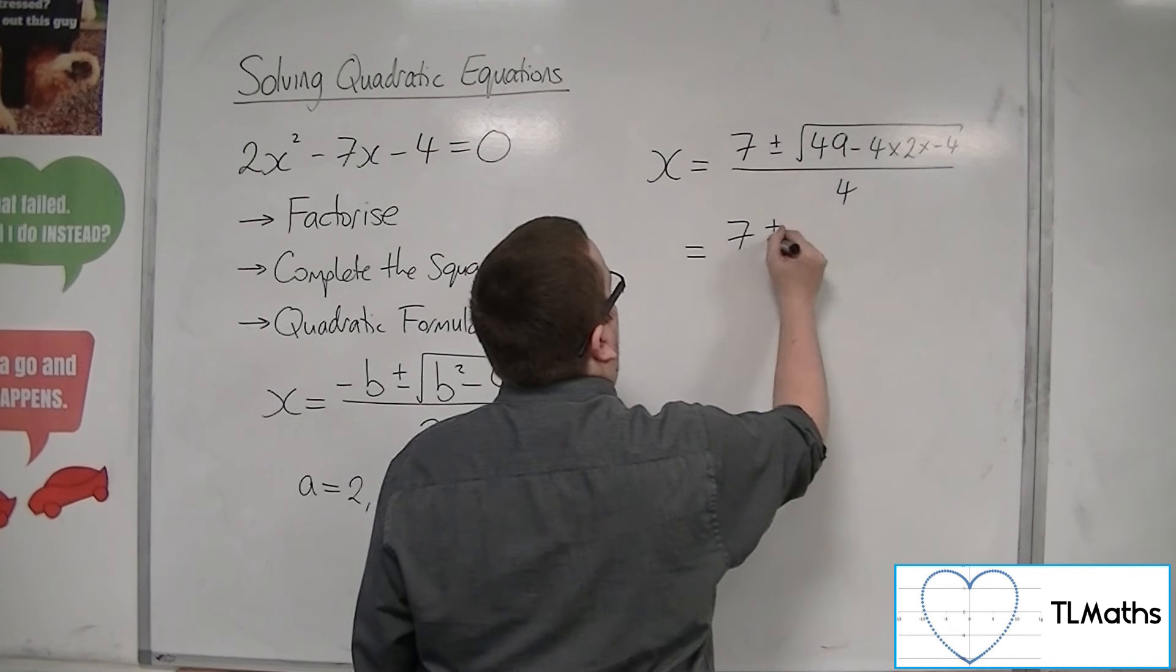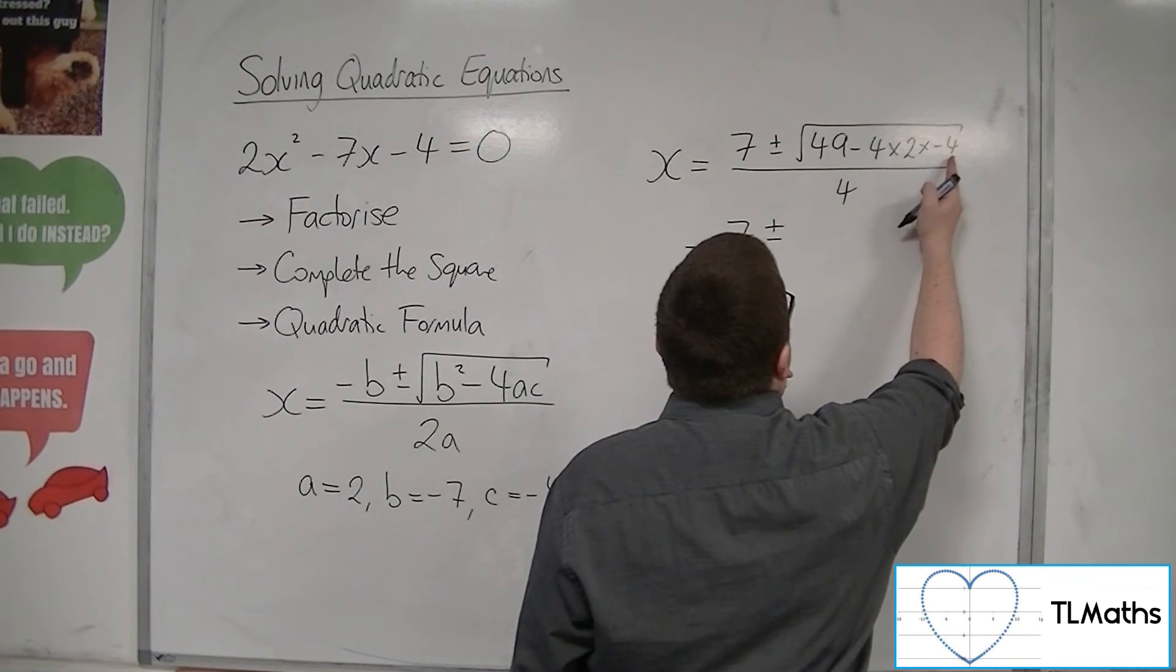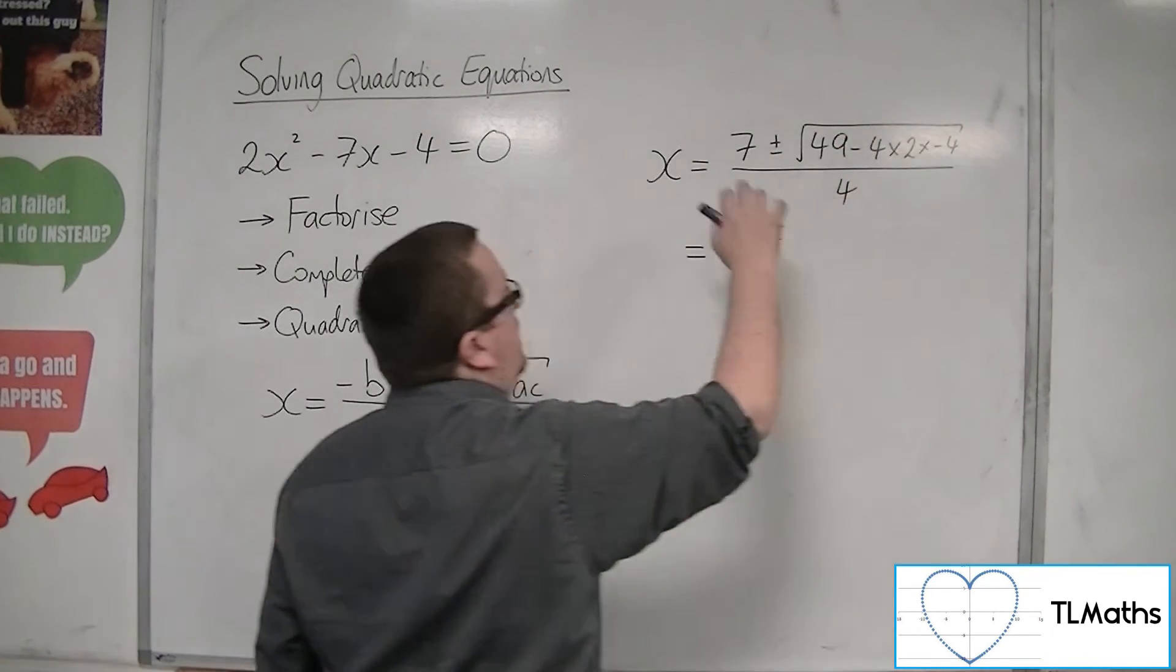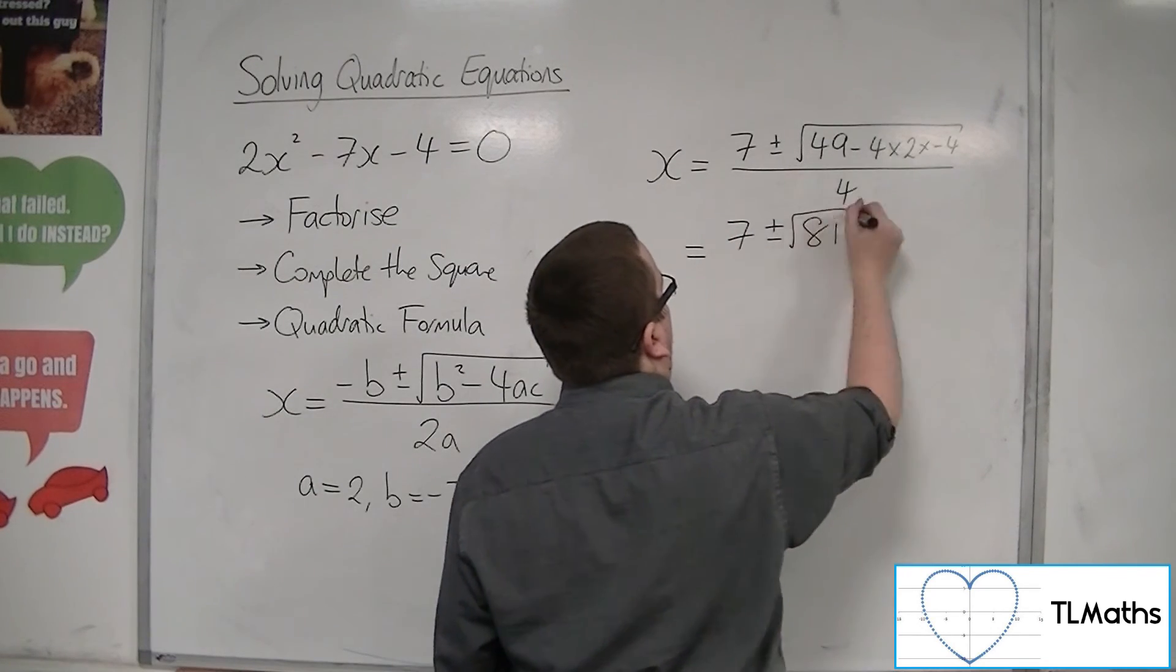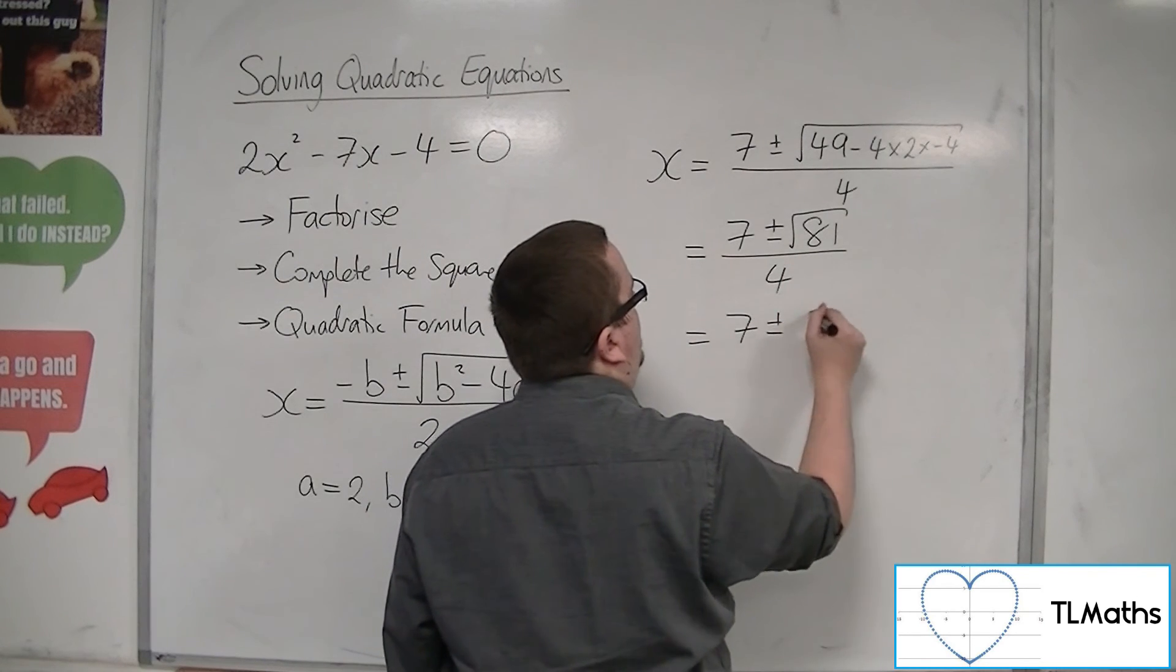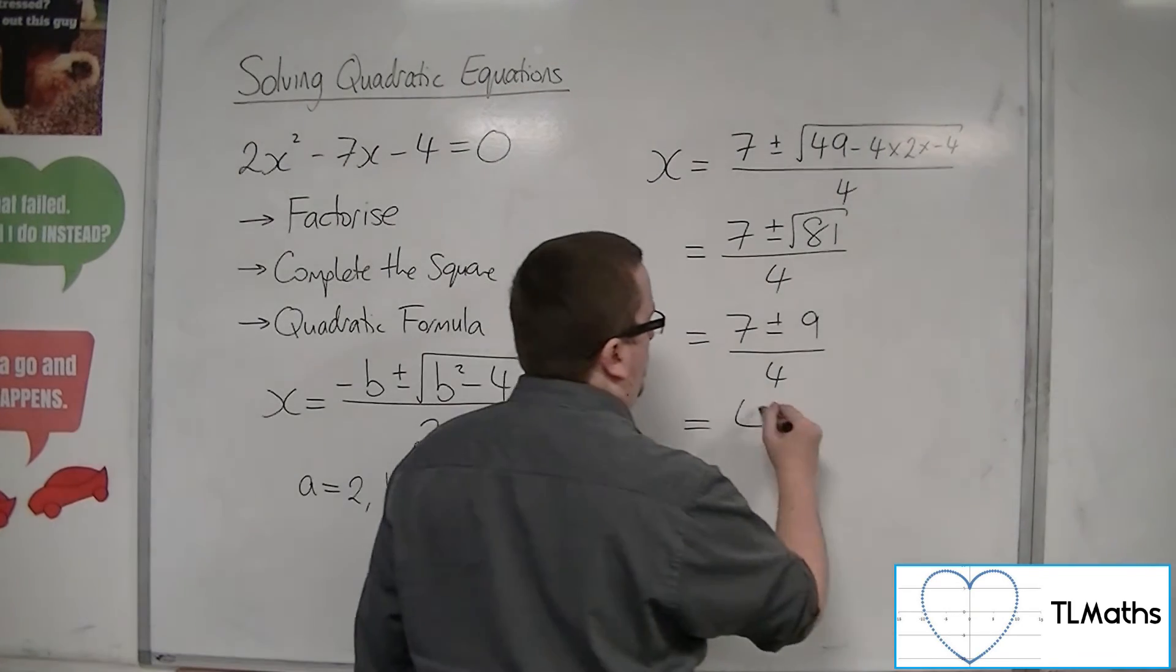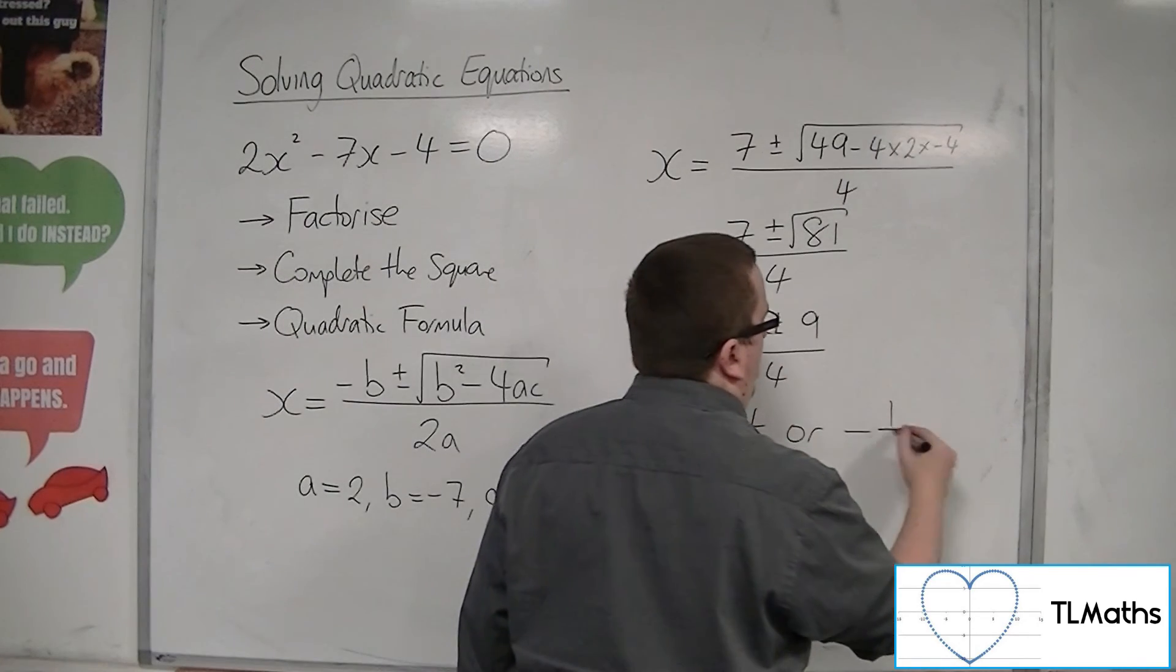So we get 7 plus or minus. Well, we've got 49, we've got 4 fours, so 16 times by 2 is 32. So 49 plus 32, because there's 2 minuses there. 49 plus 32 is 81. So 7 plus or minus 9 over 4. So 7 plus 9 is 16 divided by 4 is 4. And 7 take away 9 is minus 2 divided by 4 is minus 1 half.